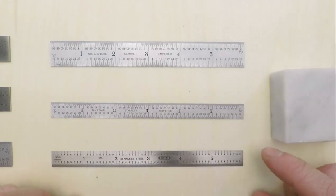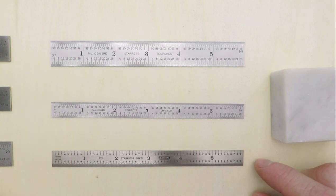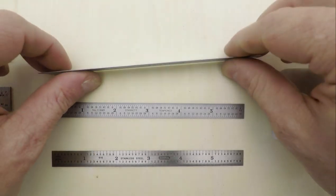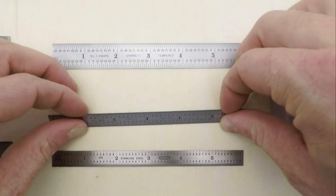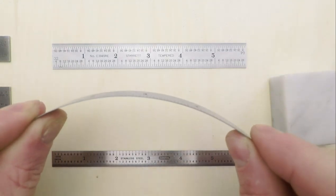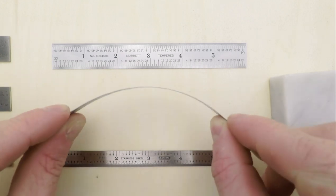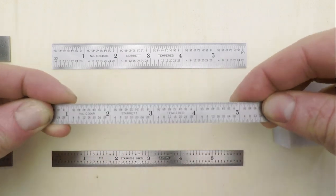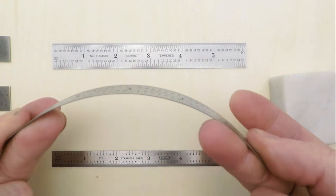Now, you can also get flexible steel rules, and I have some of those here. Starrett actually makes two different grades of flexible rules. One they call semi-flexible, which is this one, and another they call full flexible, like this one. But even with a full flexible rule, you can only bend the thing about yay far around without feeling like you're gonna damage it.